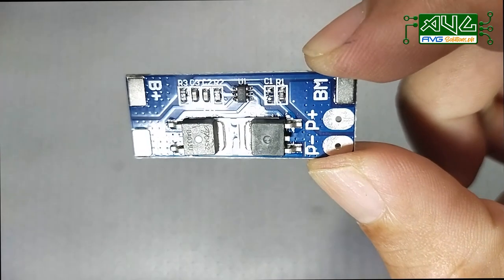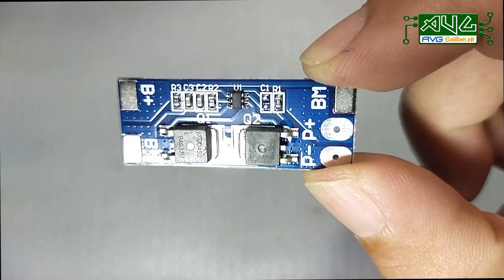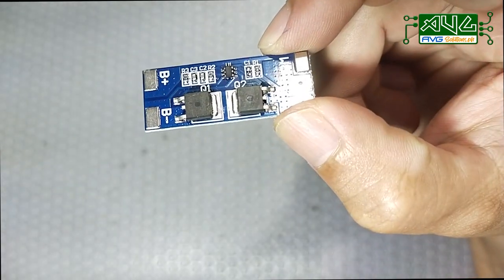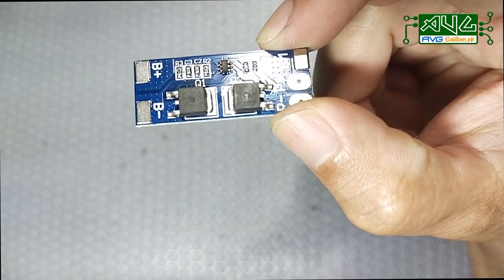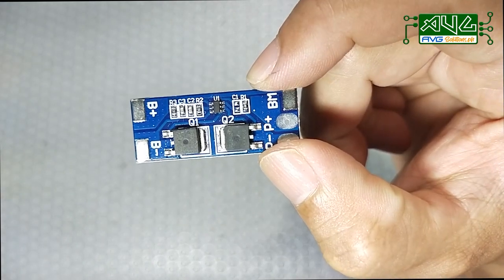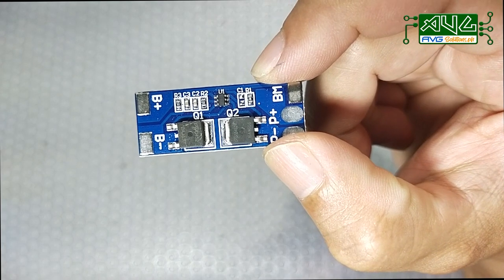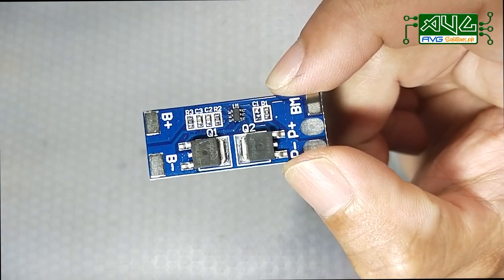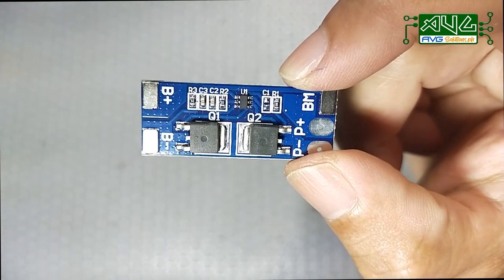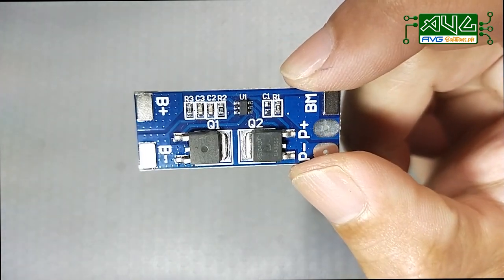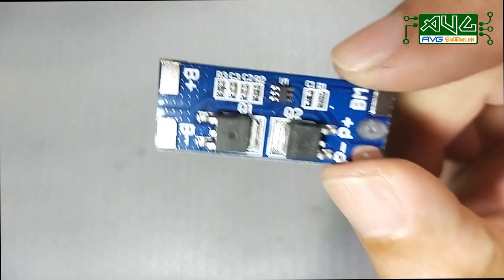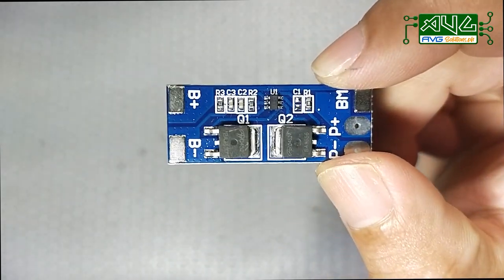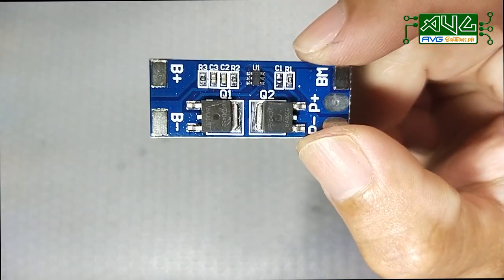Gagamit din ako ng 2S na BMS for LiFePO4 na dahil naubusan ako ng 6.4V na 8A. Ngayon gagamitin ko muna itong 7.4V na maximum siya ng 13A. So sa mga nakagamit na ng 6.4V na 2S BMS for LiFePO4, kulay green siya. Pero ngayon, for the meantime, gagamitin natin itong kulay blue 7.4V.